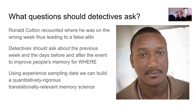Returning to the applied relevance, what should detectives be asking? Cotton recounted where he was on the wrong week, leading to a false alibi, and our data supports that this is a dominant error — people are likely to mistakenly choose the right day but the wrong week. So a detective should ask not just about the time the crime occurred, but about that same time the previous week and on days around that event, which may uncover additional errors.